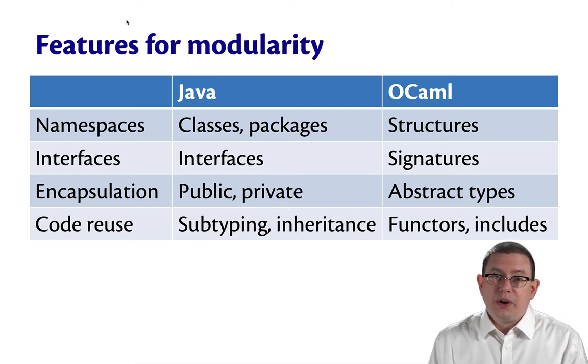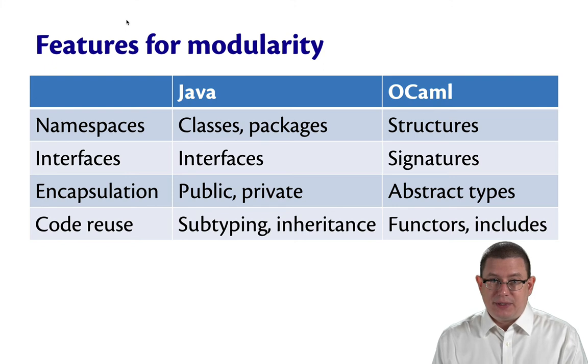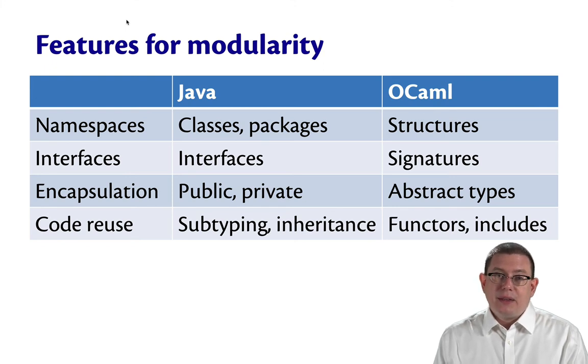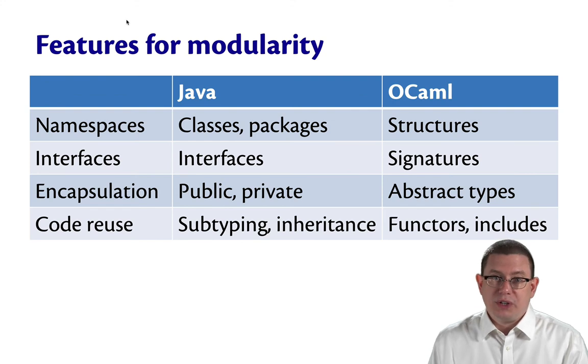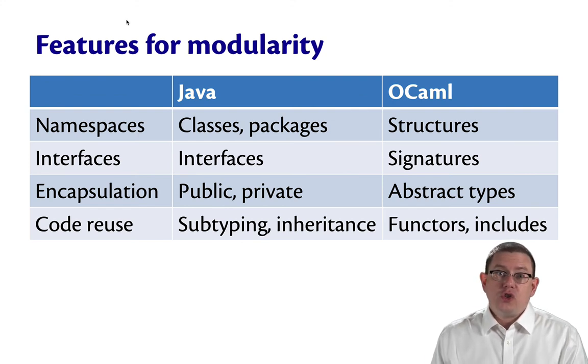One of the features for modularity that's important is namespaces. By that I mean the kind of dot notation that you probably got used to in your first programming language. In OCaml, for example, list.sort. So there's a hierarchical namespace so that short names like sort can mean different things in different contexts without colliding. Java provides classes and packages to get hierarchical namespaces.